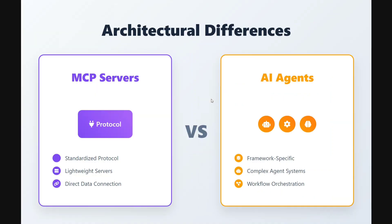Coming to the crux — the architectural difference between MCP and AI agents. MCP is a protocol used by AI agents to connect to tools. Hence they are not standalone agents; they are nothing on their own — just servers providing connection to data. Lightweight servers with direct data connections. While AI agents are framework-specific, complex systems built for workflow orchestration.